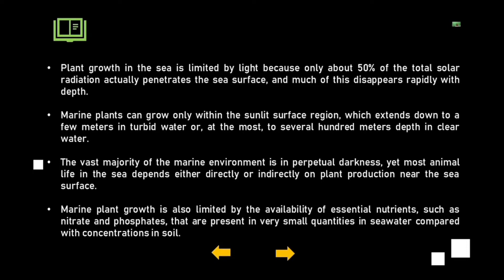On the other hand, certain properties of the sea are less favorable for life. Plant growth in the sea is limited by light, because only about 50 percent of the total solar radiation actually penetrates the sea surface, and much of this disappears rapidly with depth. Light plays a vital role in enabling plants to survive.